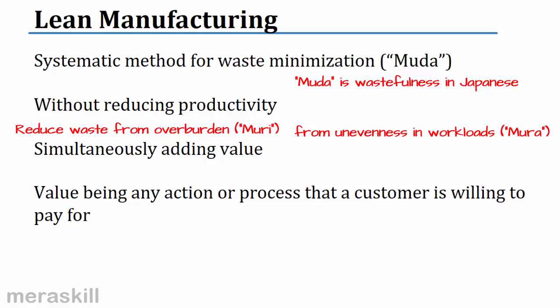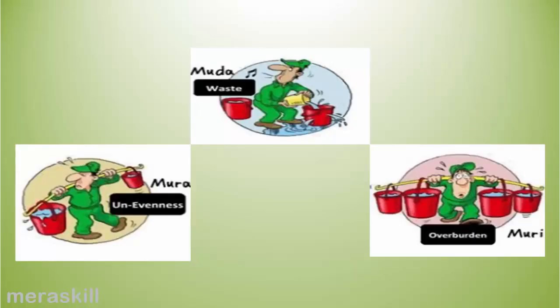Lean manufacturing concentrates entirely on a systematic reduction of waste. Do not reduce productivity but add value. Value is any process or action that a customer is willing to pay for. Value is defined from the point of view of the customer. This is how Muda, Muri, and Mura could be represented — this is how Toyota defined it.